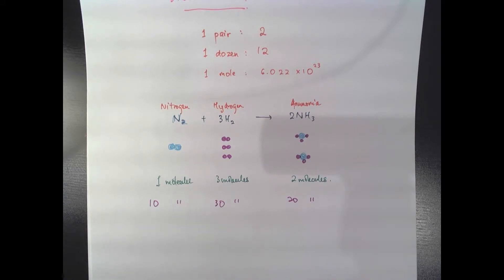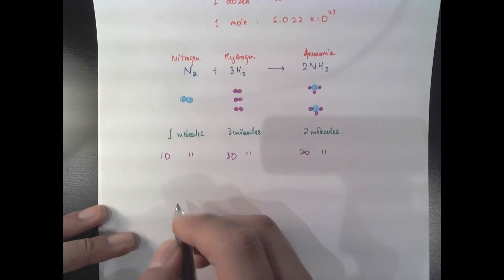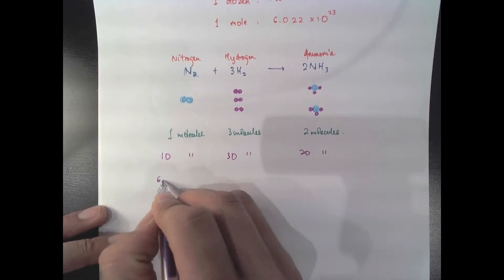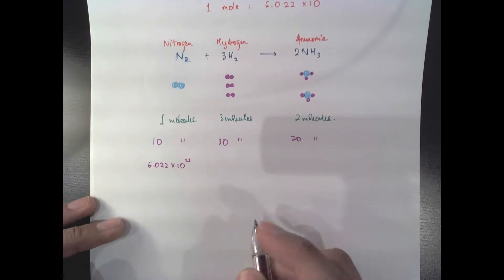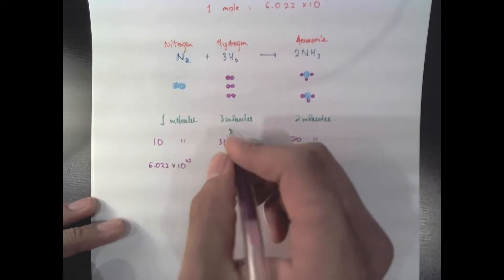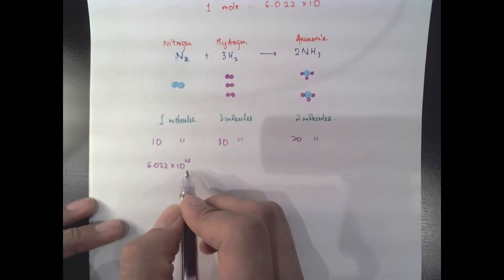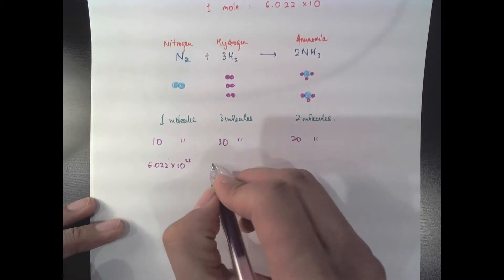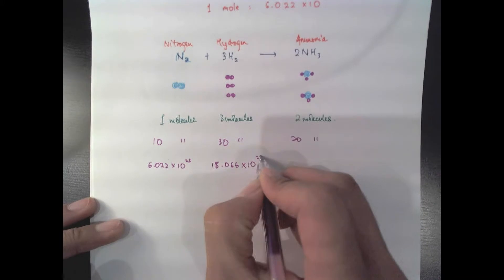Now I could, of course, multiply one, three, and two by any number I wish, and the equation would still hold. So how about I multiply this by 6.022 times 10 to the 23. Now how many molecules of hydrogen I'm going to need? Well, I'm going to need three times more than that number because the ratio is one to three.